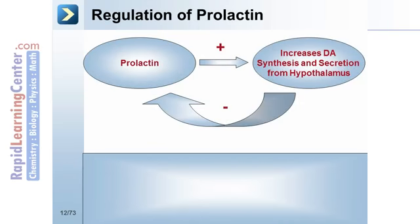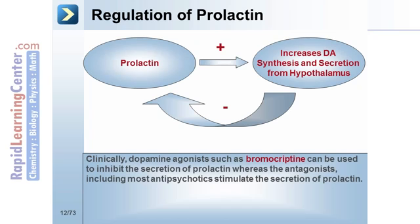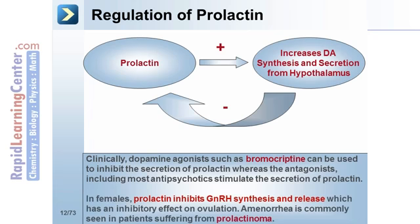Let's review the actions of specific hormones within the endocrine system. Prolactin increases dopamine synthesis and secretion from the hypothalamus. By negative feedback, dopamine subsequently inhibits prolactin secretion. Clinically, dopamine agonists such as bromocriptine can therefore be used to inhibit the secretion of prolactin, whereas the antagonists, including most antipsychotics, stimulate the secretion of prolactin. In females, prolactin inhibits GnRH synthesis and release, which has an inhibitory effect on ovulation. Amenorrhea is commonly seen in patients suffering from prolactinoma.